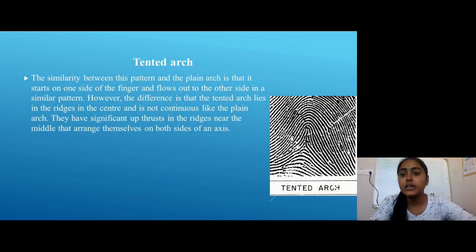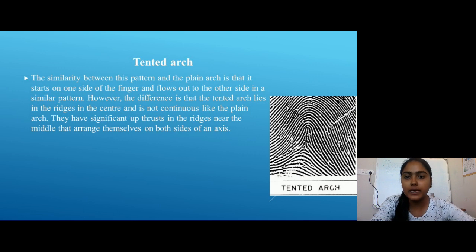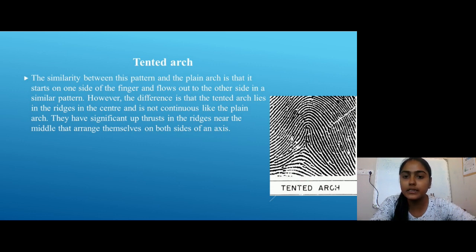The second subcategory is Tented Arch. The similarity between this pattern and the Plain Arch is that it starts on one side of the finger and flows out to the other side in a similar pattern. However, the difference is that the Tented Arch has ridges in the center that are not continuous like the Plain Arch — they have a slightly upthrust in the ridges near the middle that arrange themselves on both sides.